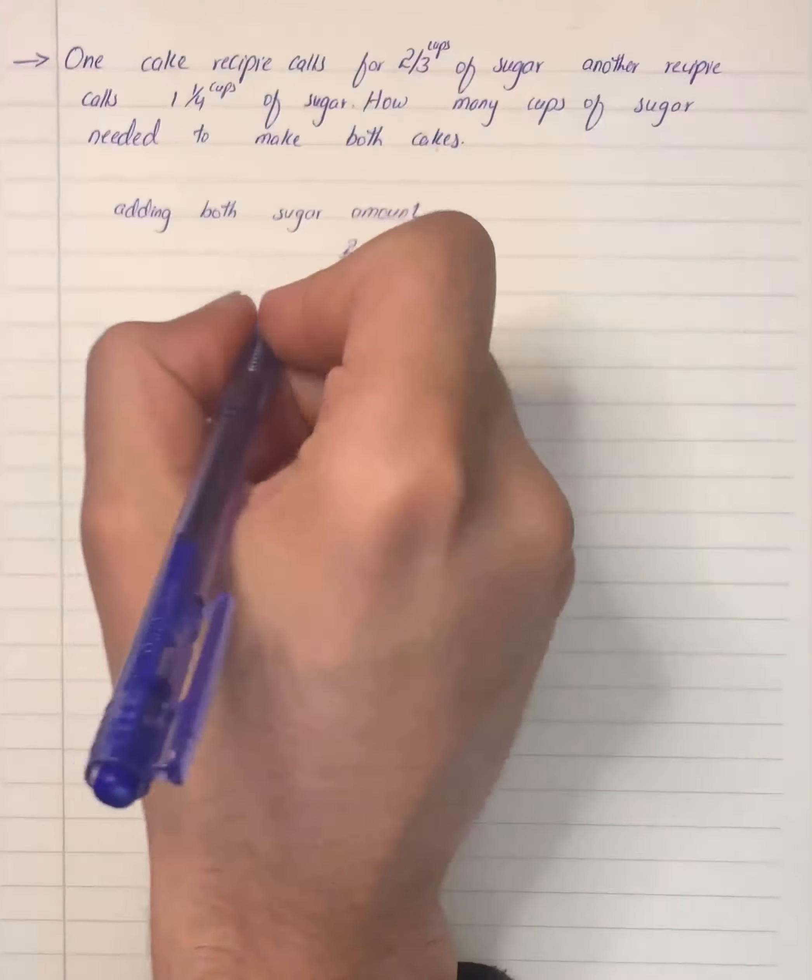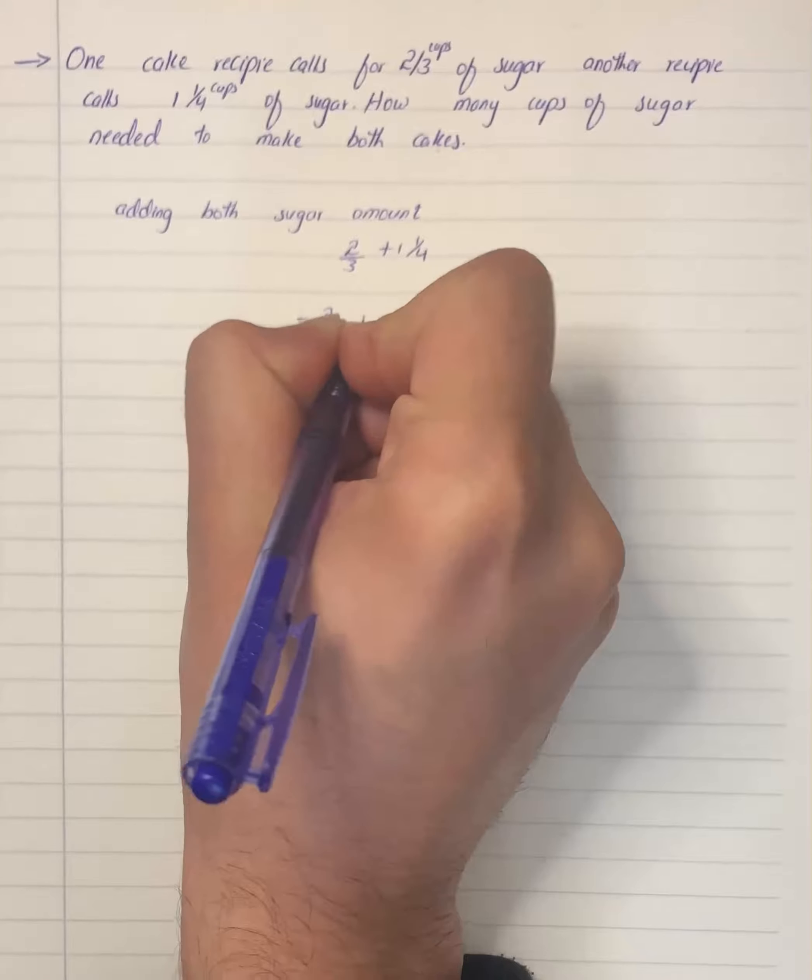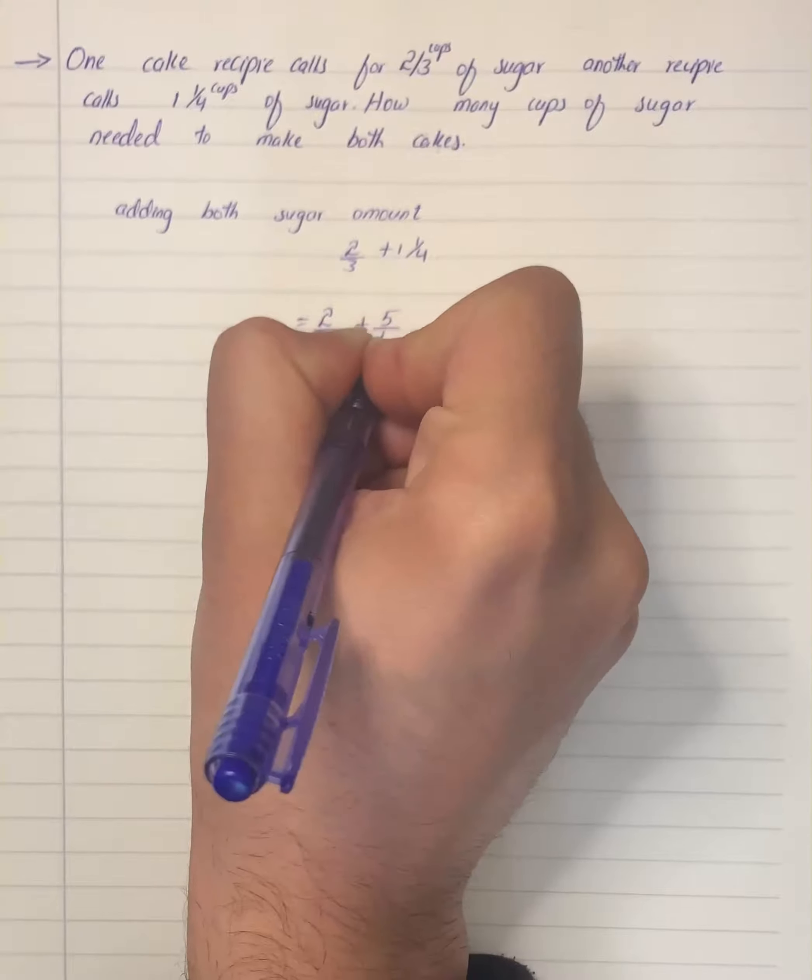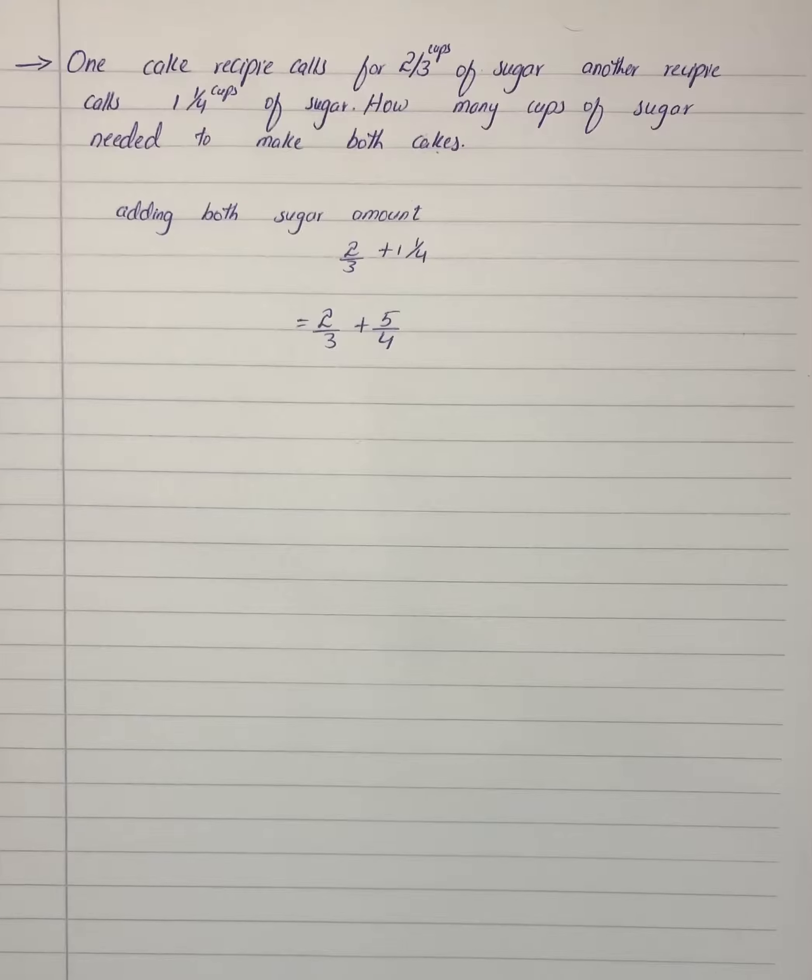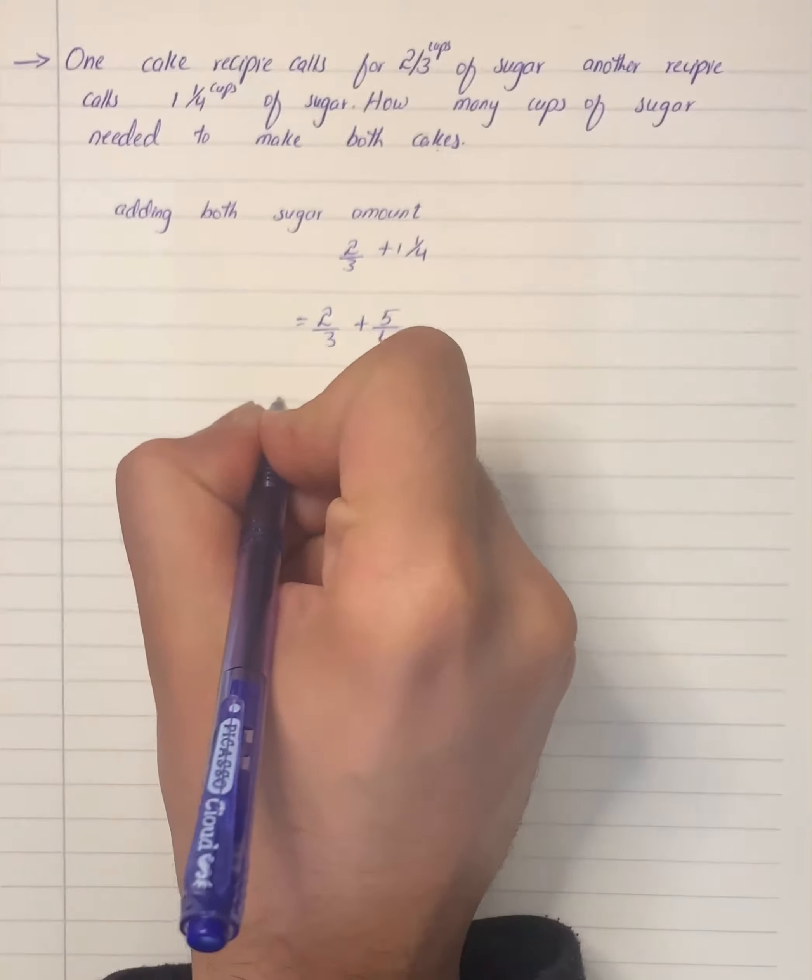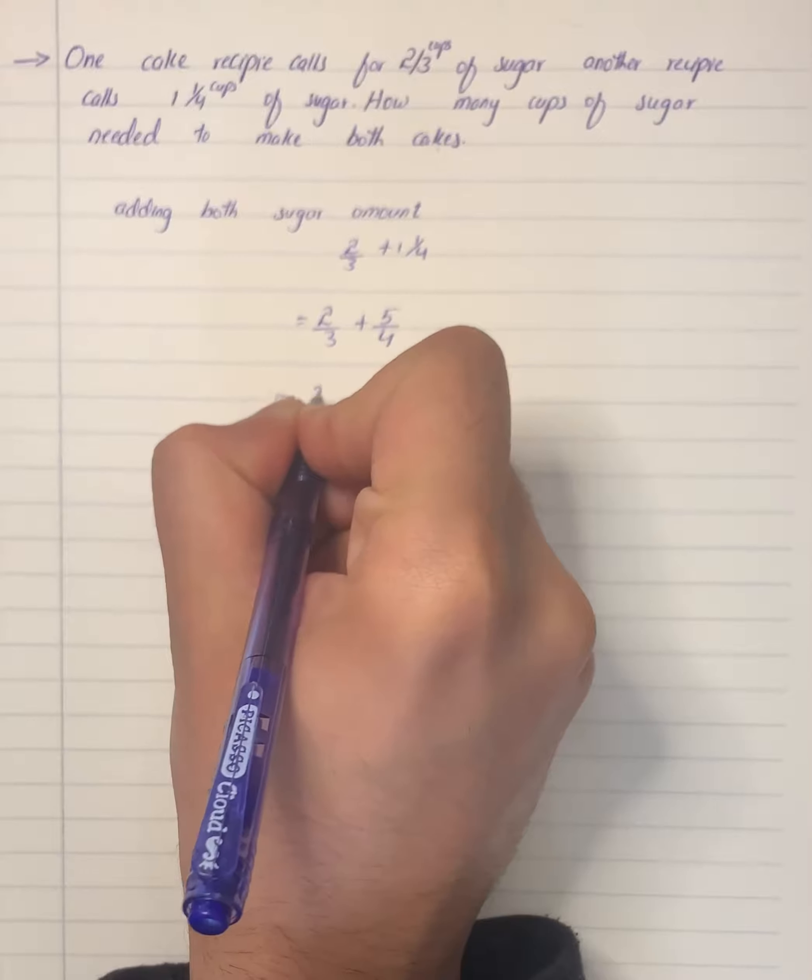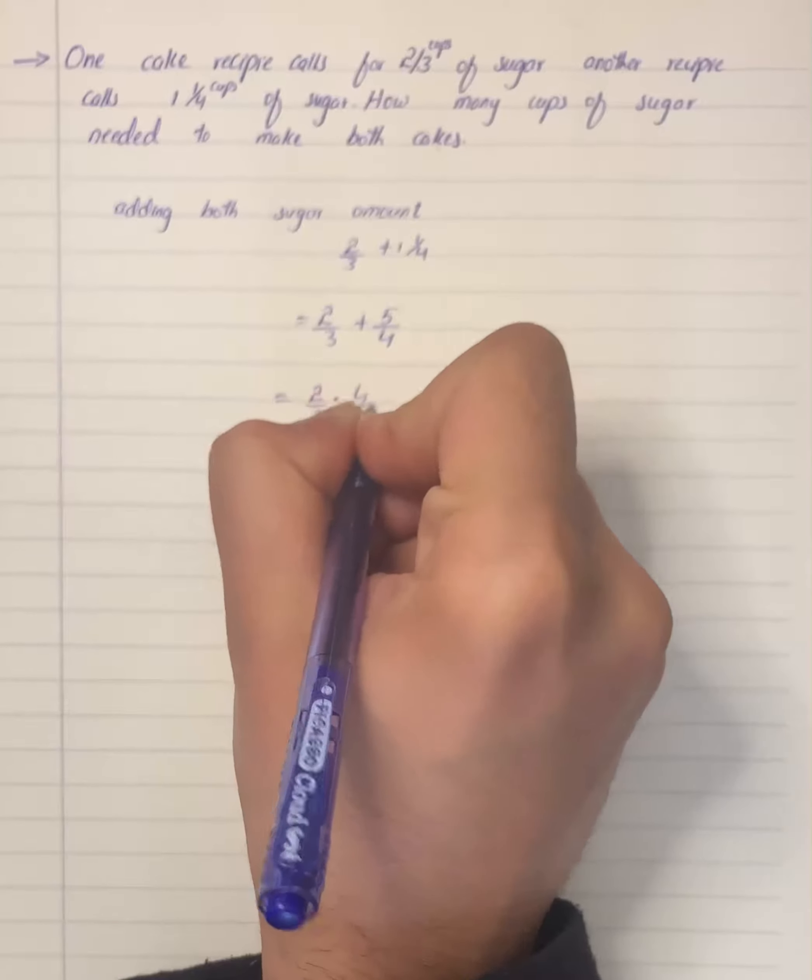It will give us two by three plus five by four. Now we will write each fraction using the least common denominator, which is 12.